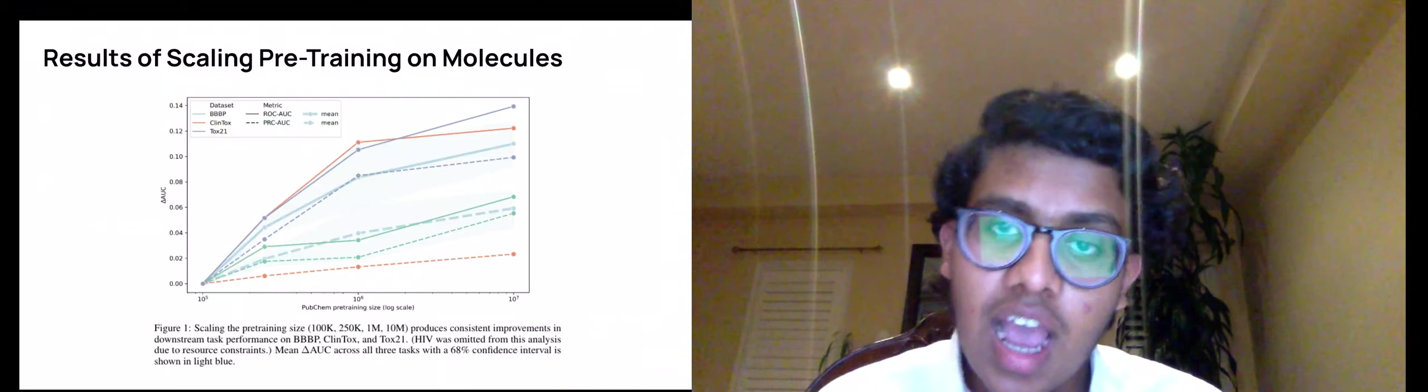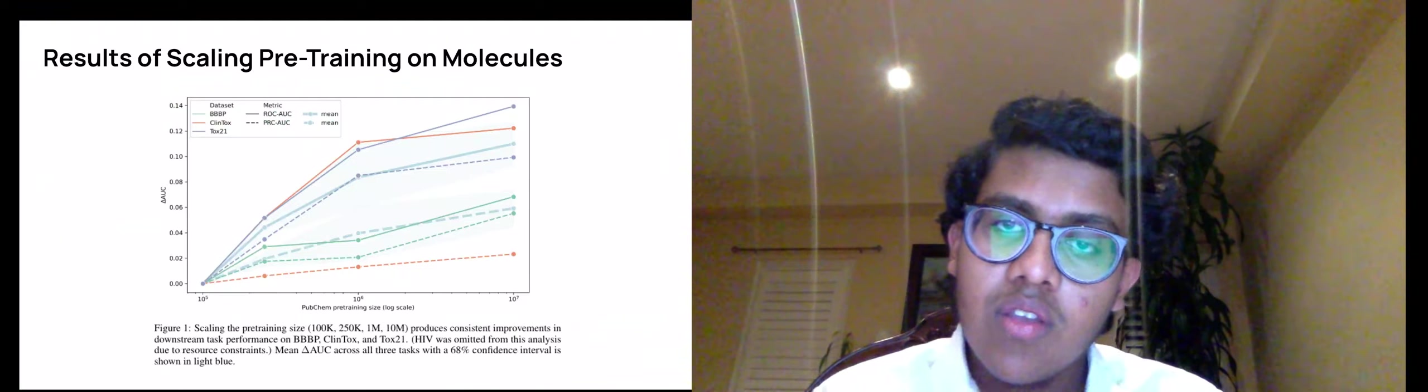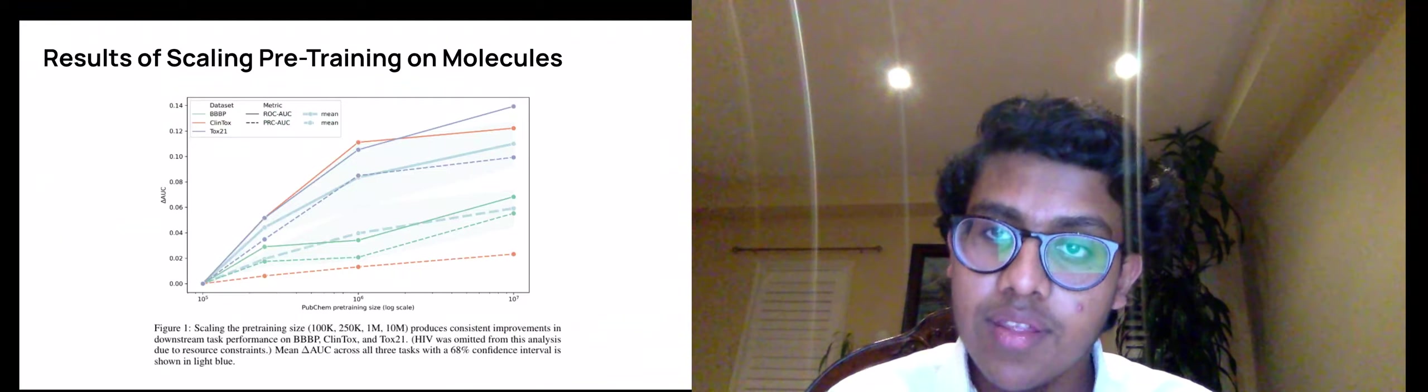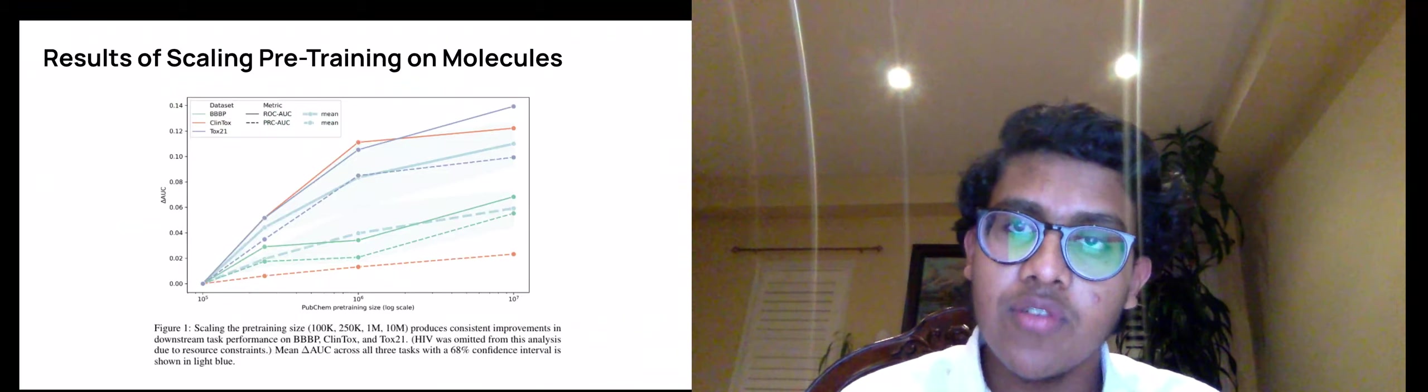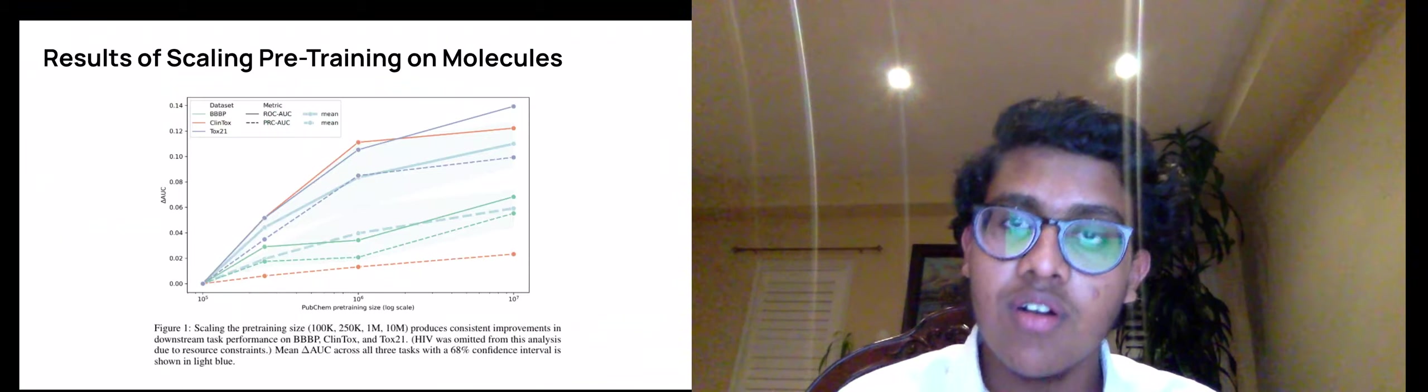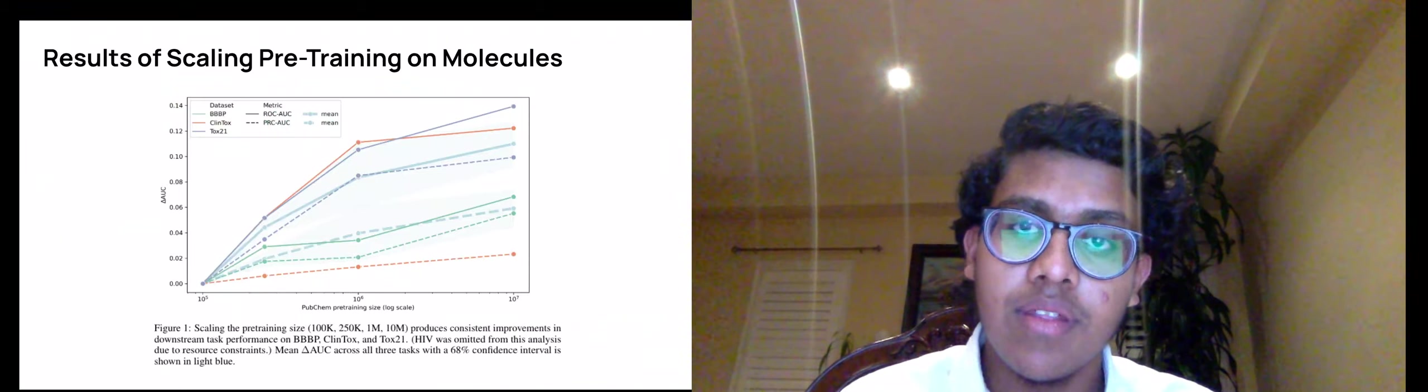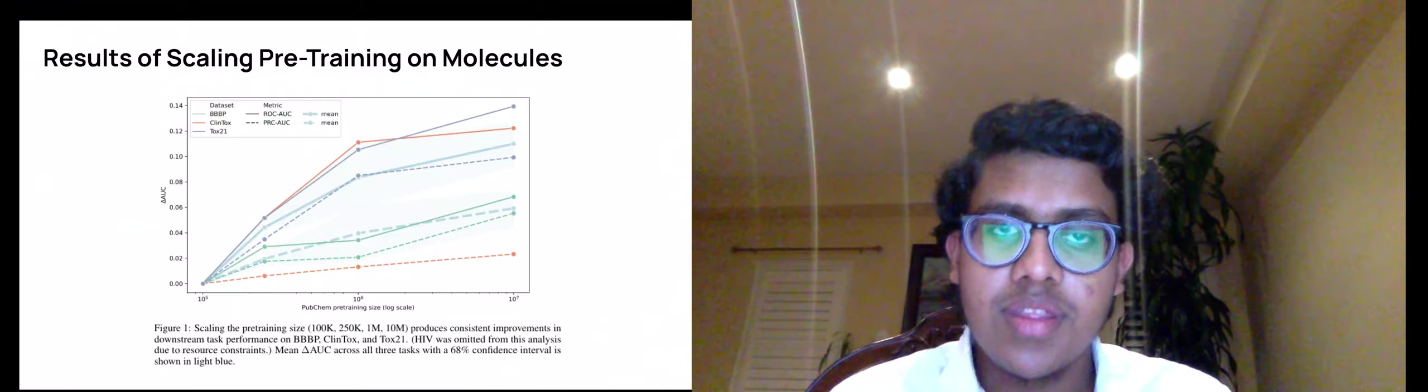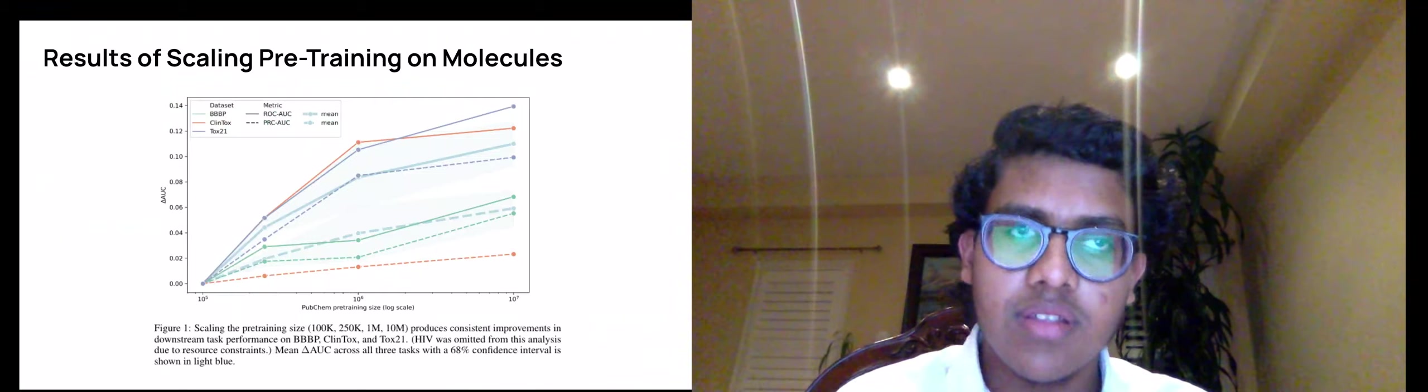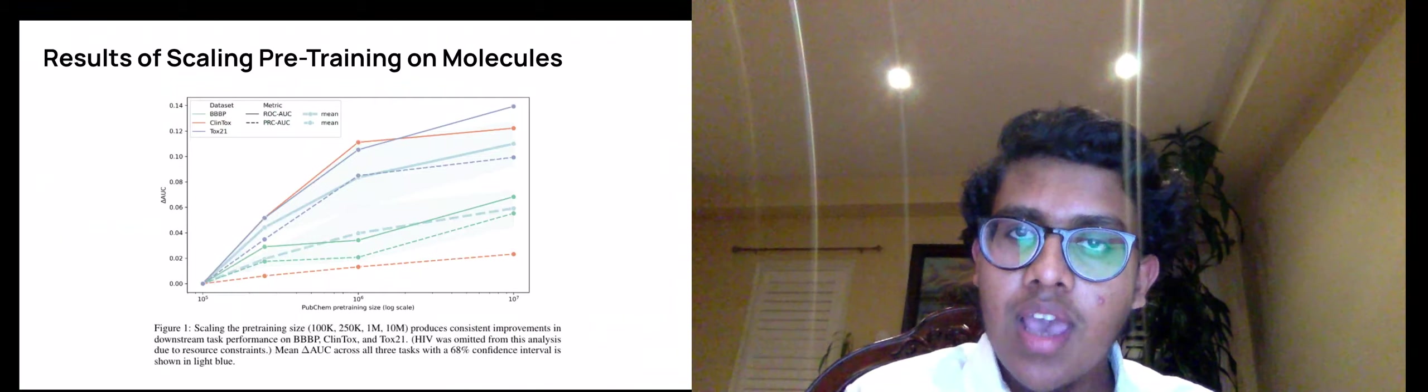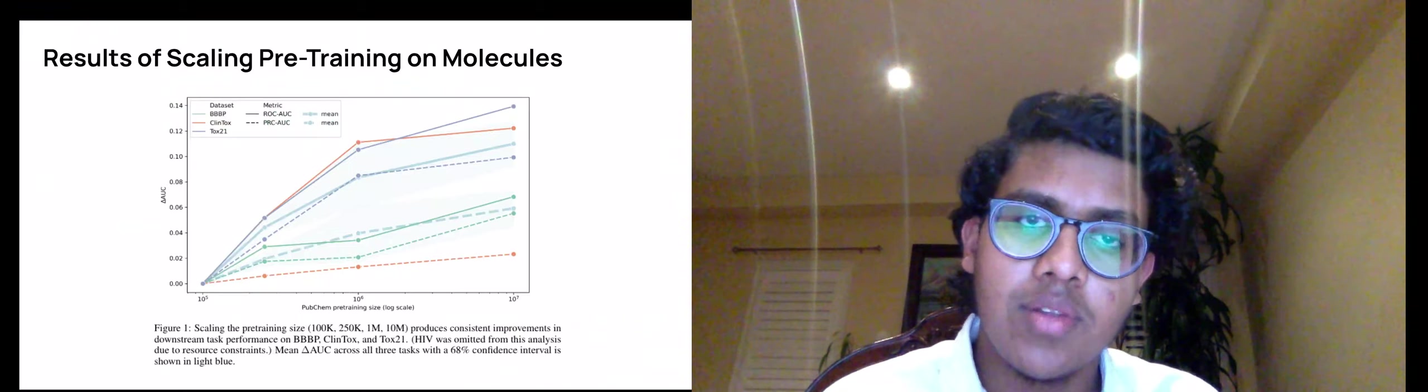Notably, on average, ChemBERTa scales incredibly well with more pre-training data. When you scale ChemBERTa from pre-training on 100,000 SMILES strings to 10 million SMILES strings, we see an average boost of over 11% in ROC AUC across all four benchmarking datasets and an average 6% boost on the PRC AUC metric. These results suggest that ChemBERTa learns more robust representations with additional data and is able to leverage this information when learning downstream tasks by exploring more of the chemical space.